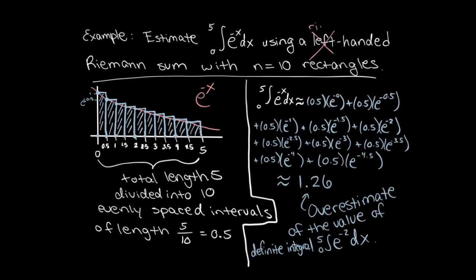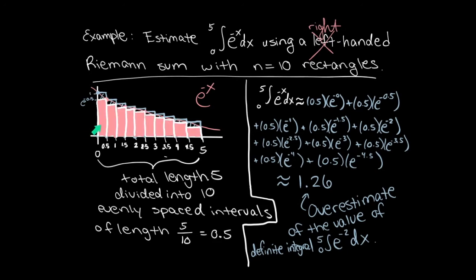How would the problem change if I did a right-handed Riemann sum for the exact same problem? We already have our subdivisions in place — still 10 rectangles, total length of 5 divided into 10 intervals. But now the height of the rectangle is not supposed to be on the left endpoint; it should be on the right endpoint. So our rectangles change. The first rectangle for a right-handed Riemann sum will look more like this. On the second interval, the right-handed x value is 1, so the height of the function at the right-handed x value will equal the height of the rectangle.